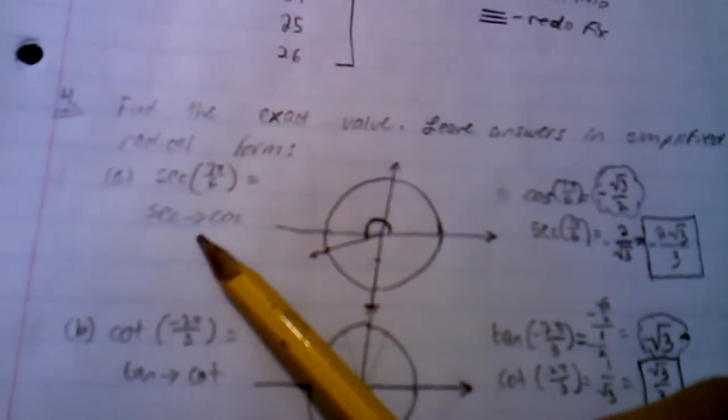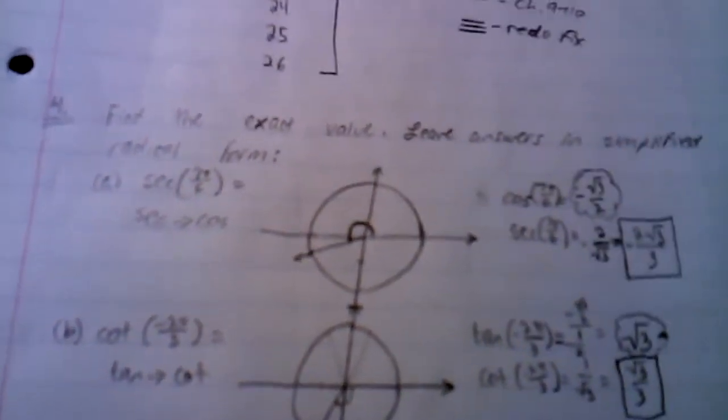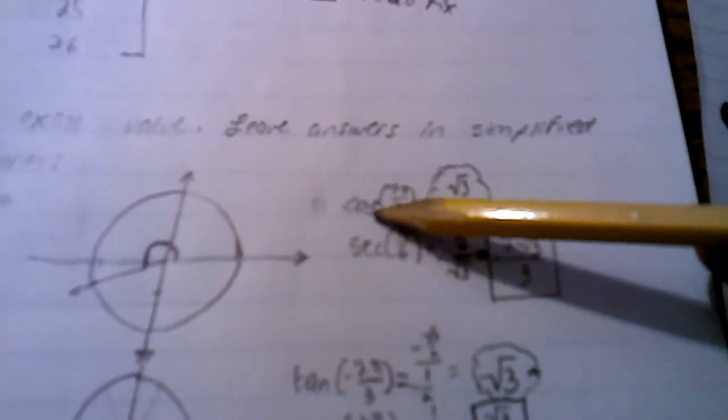Secant of 7π/6 is the first one, and know that secant relates to cosine. That's 7π/6, the angle. You take the cosine of 7π/6—this is where you need cosine.